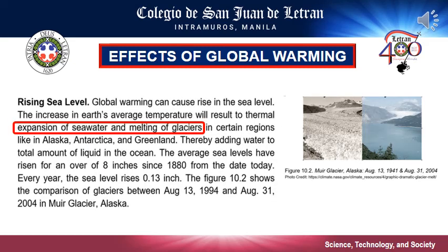First is rising sea level. Sea level can rise by two different mechanisms with respect to global warming. First, as the ocean warms due to an increased global temperature, seawater expands, taking up more space in the ocean basin and causing a rise in water level. The second mechanism is the melting of ice over land, which then adds water to the ocean. As you can see on the figure, it shows the comparison of glaciers between 1994 and 2004 in Alaska.